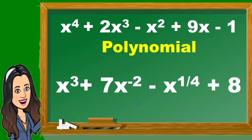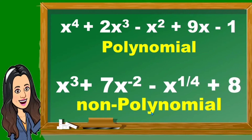How about this one? x cubed plus 7x raised to negative 2 minus x raised to 1 fourth plus 8. This is non-polynomial, because if you are going to observe, the exponents of a certain term are negative or fraction.